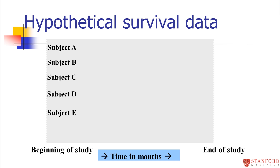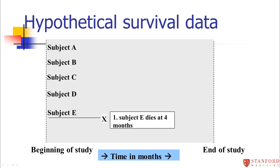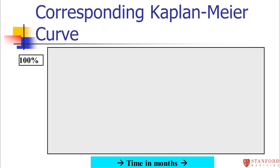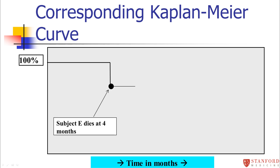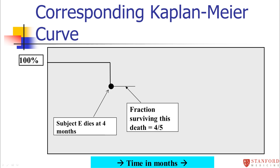Let me show you how this works with a simple example. You have five subjects who start a study. The first event is that subject E dies four months into the study. We're going to define the survival curve right at four months whenever events occur. Our curve starts at 100%, but at four months subject E dies, so we drop the curve down.